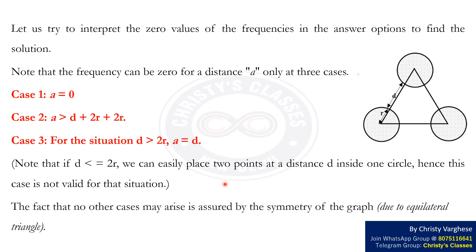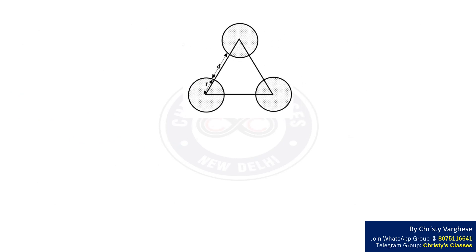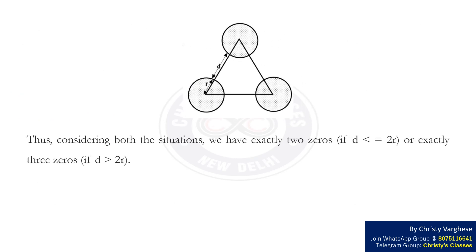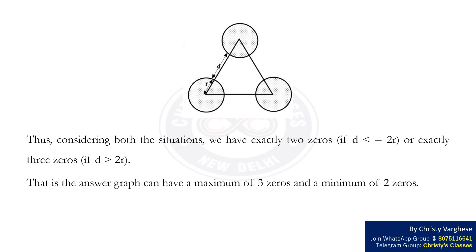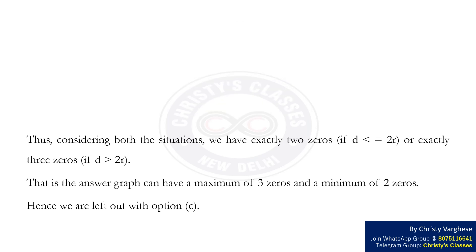The fact that no other cases may arise is assured by the symmetry of the graph due to the equilateral triangle. Thus, considering both situations, we have exactly two zeros if D is less than or equal to 2R, or exactly three zeros if D is greater than 2R. That is, the answer graph can have a maximum of three zeros and a minimum of two zeros. Hence we are left with option C as our required answer.